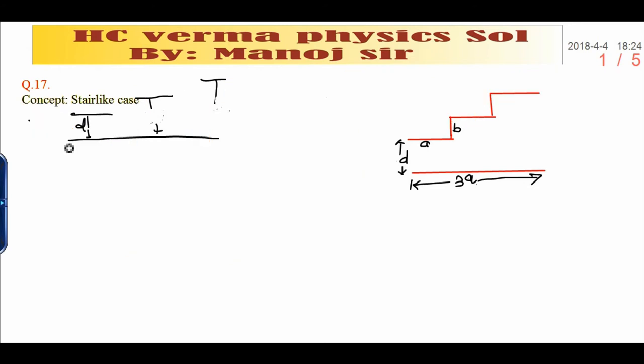Dear students, today we are going to discuss S.C. Verma physics solution question number 17 from the capacitance chapter. This is the concept which will tell you about the stairlike case: one plate having length 3a, another plate is divided into a stair-like structure having each length a and width b.